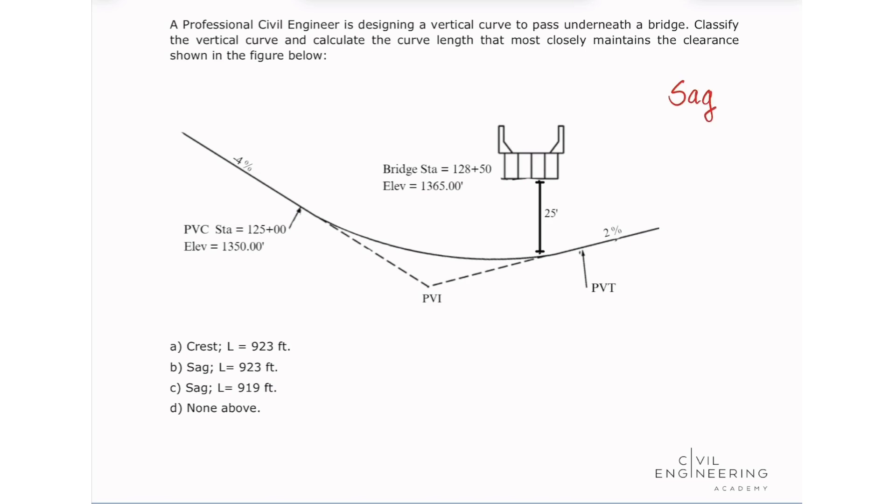Now we can go and calculate the curve length that most closely maintains the clearance shown in the figure below. So we need to calculate the curve length that maintains this clearance of 25 feet. And for that, we're going to be looking in our NCES reference handbook version 2.0 at page 279.